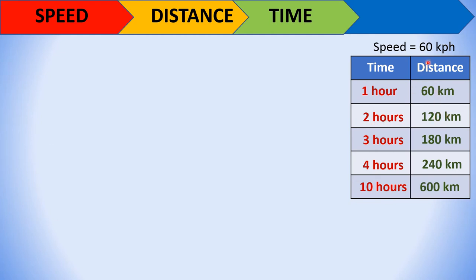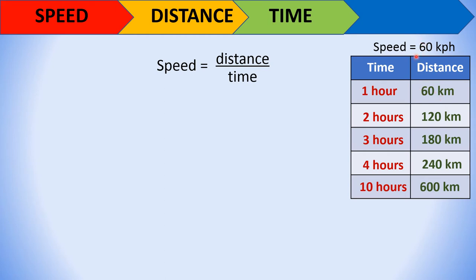Now comparing distance with speed and time: 60×1 = 60, 60×2 = 120, 60×3 = 180, 60×4 = 240, 60×10 = 600. So to get distance, multiply speed by time. The formula for distance is speed times time.